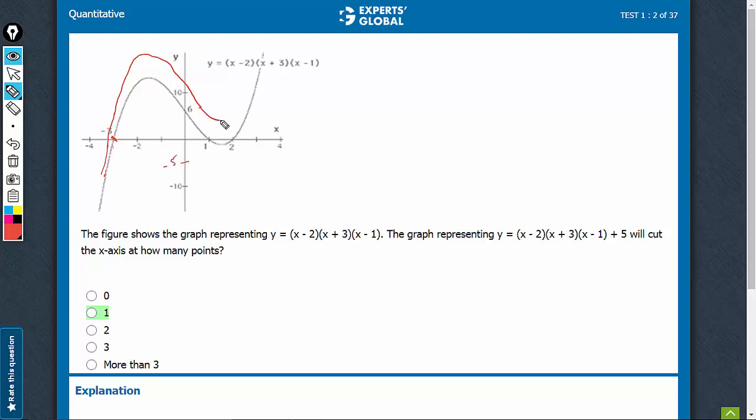and when the graph lifts itself by 5 points, it's going to all be up there. It's not going to intersect the x-axis except at one point. So it's going to be only 1 point.